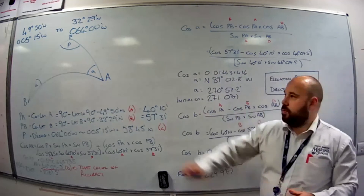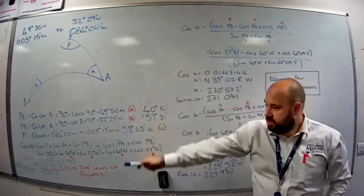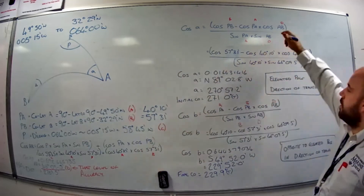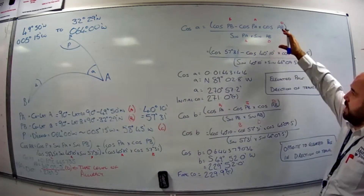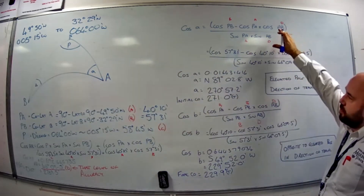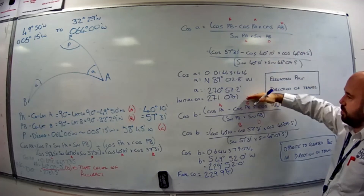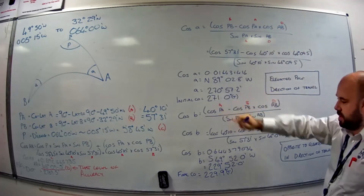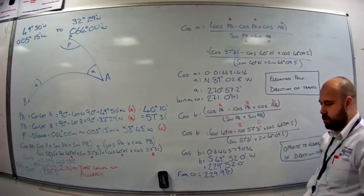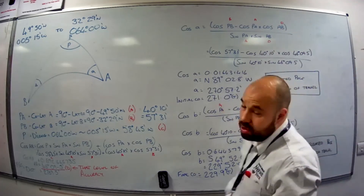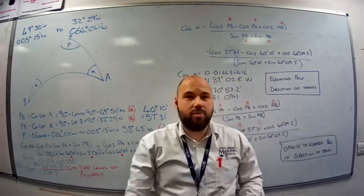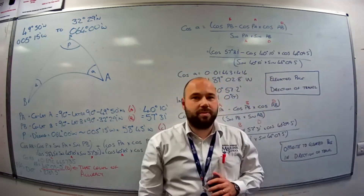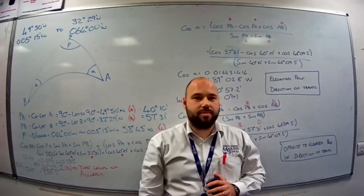So to summarise: we work out the distance, we get the distance, we get the cos A formula from the formula sheet and find our initial course, then we get the cos B formula and find the final course. You don't need to work out both, but the question might ask you to do so.